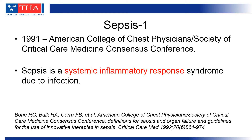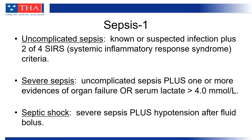The first consensus conference was held in 1991, with conclusions published in 1992. The consensus group defined sepsis as a systemic inflammatory response to an infection. They defined three categories of sepsis: uncomplicated sepsis, which is known or suspected infection plus two or more SIRS criteria; severe sepsis, which was sepsis with signs of organ failure or an elevation in serum lactate greater than 4; and septic shock, which was severe sepsis plus a persistent hypotension following fluid resuscitation.